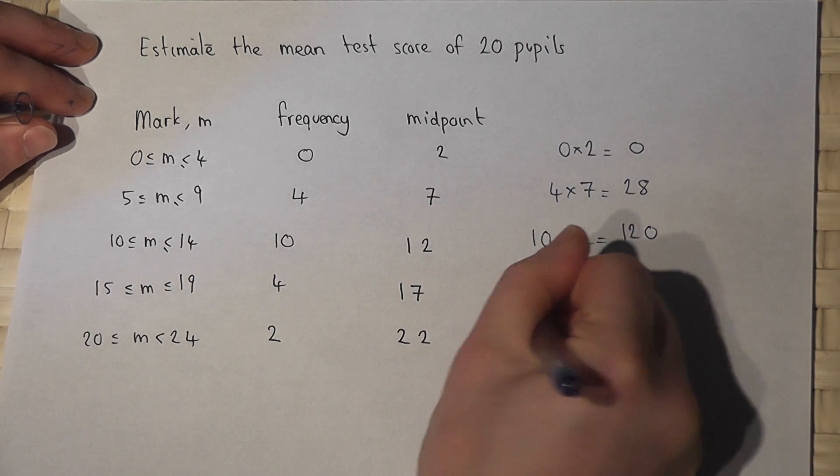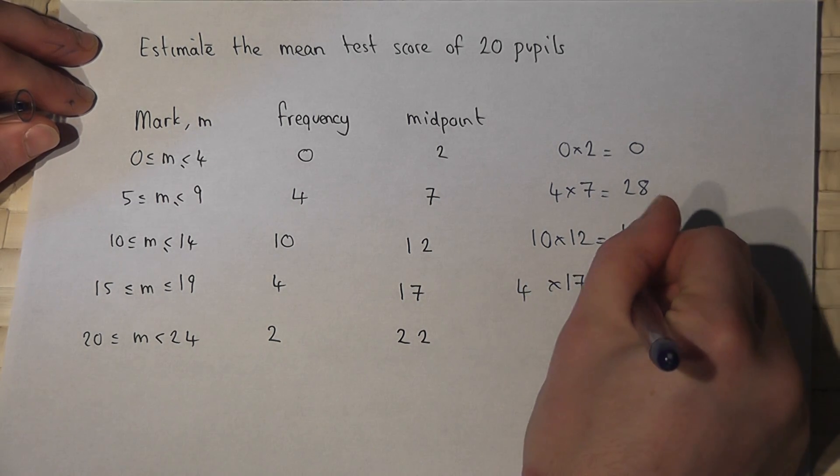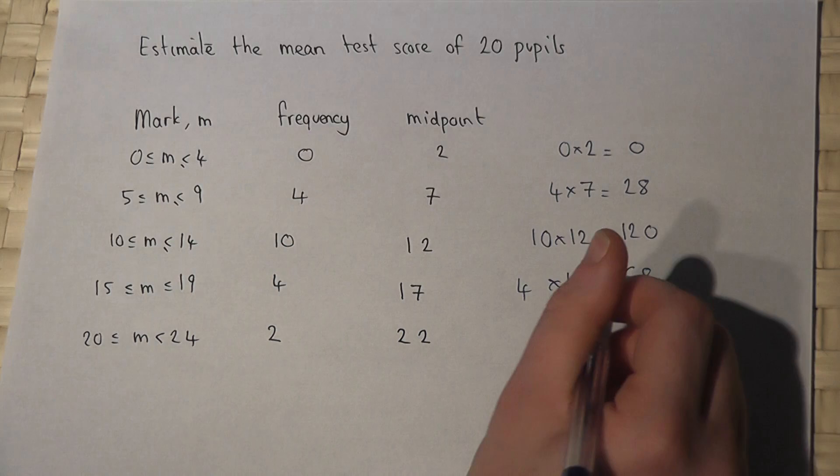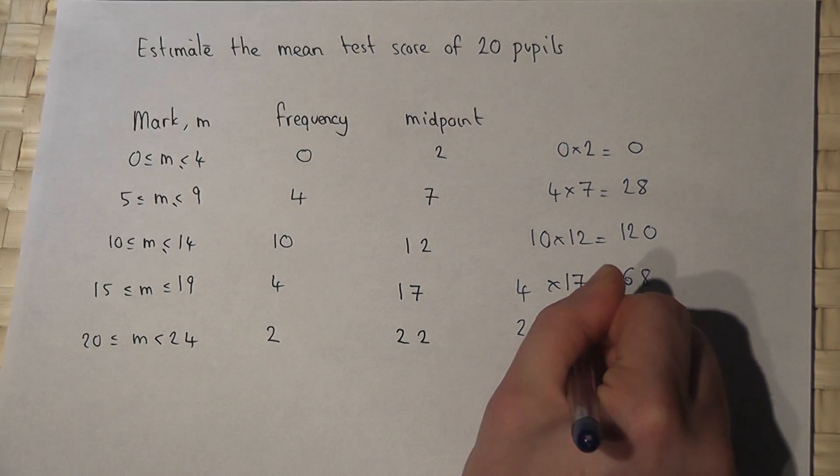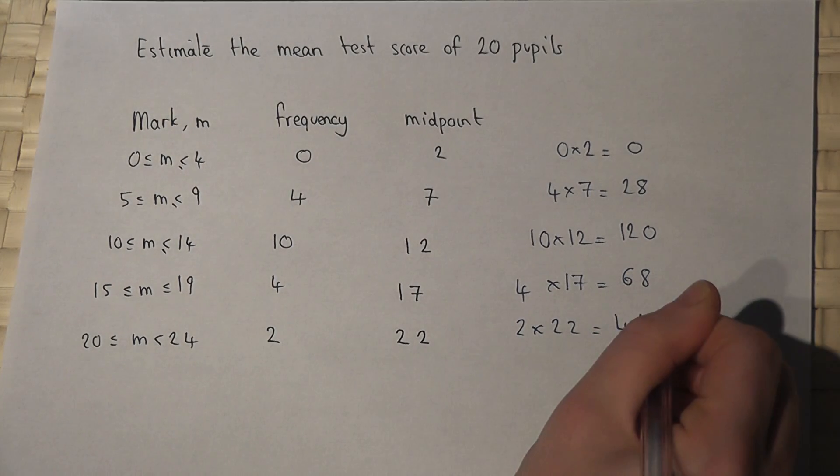Four people scored seventeen, so that contributes sixty-eight. And two people scored twenty-two, so that contributes forty-four to the mean.